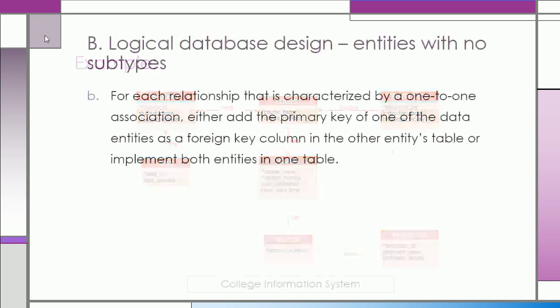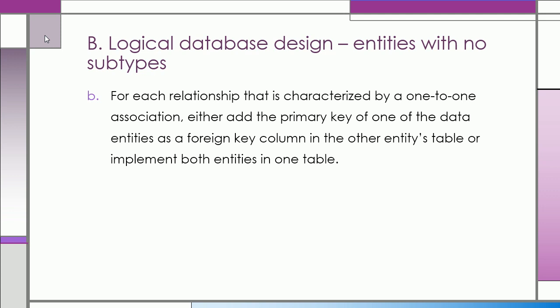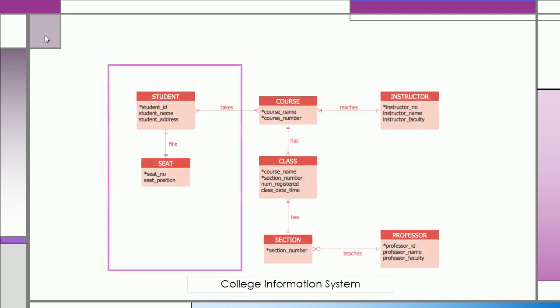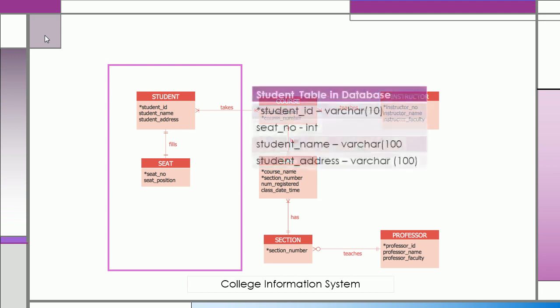On the other hand, for each relationship that is characterized by a one-to-one association, either add the primary key of one of the data entities as a foreign key column in the other entities table, or implement both entities in one table. For example, the student and the seat entities has a one-to-one relationship or cardinality. We could use the seat number as the foreign key of the student table.